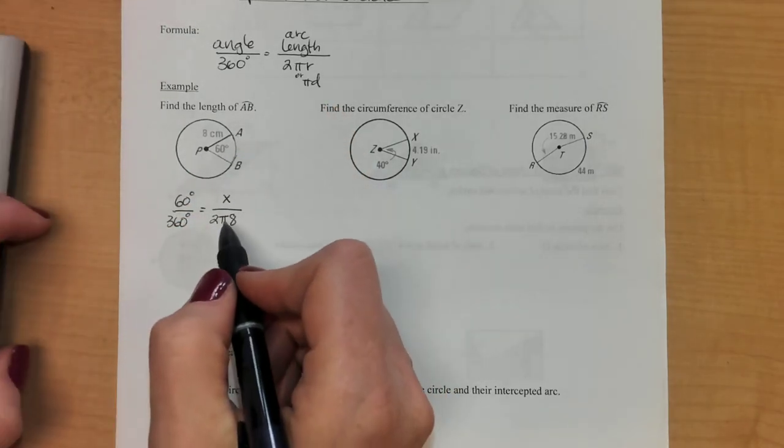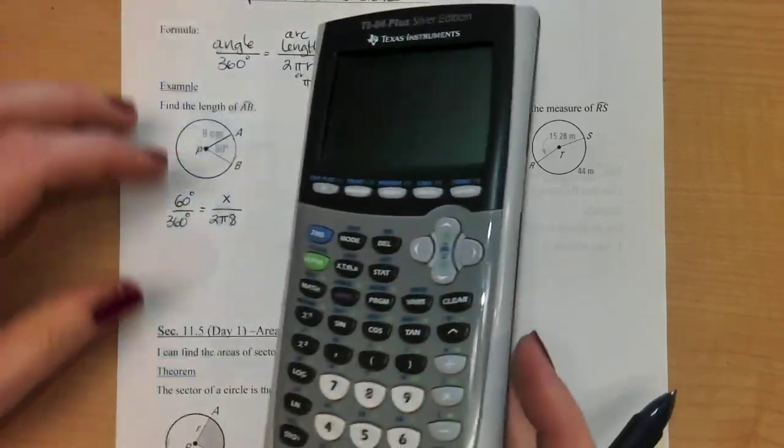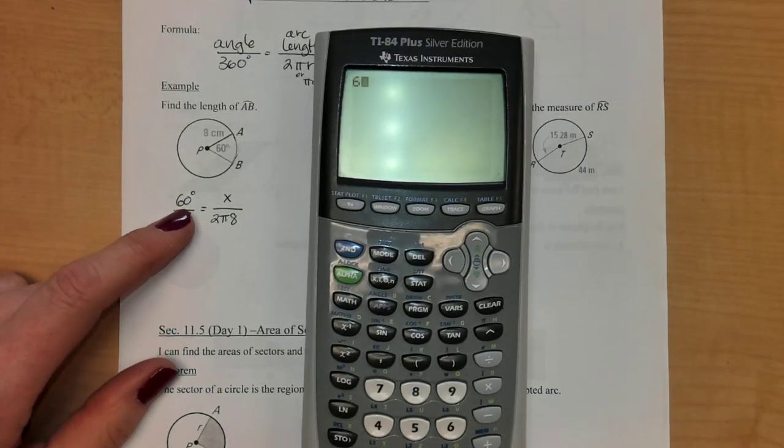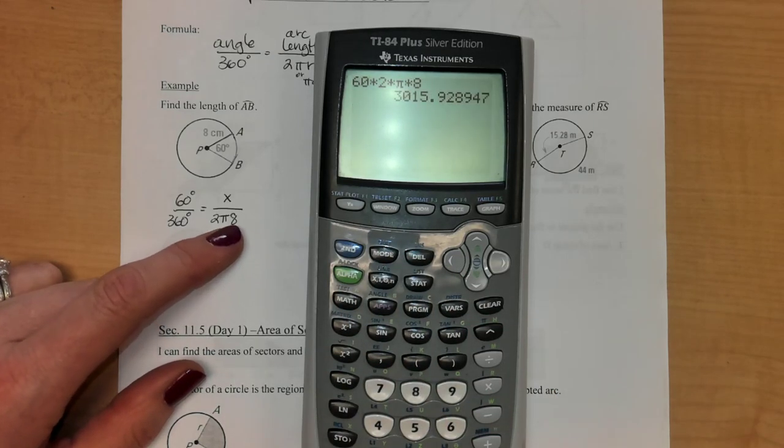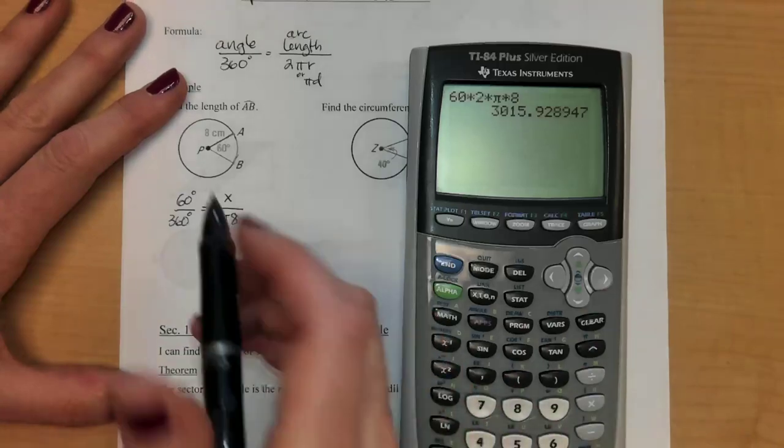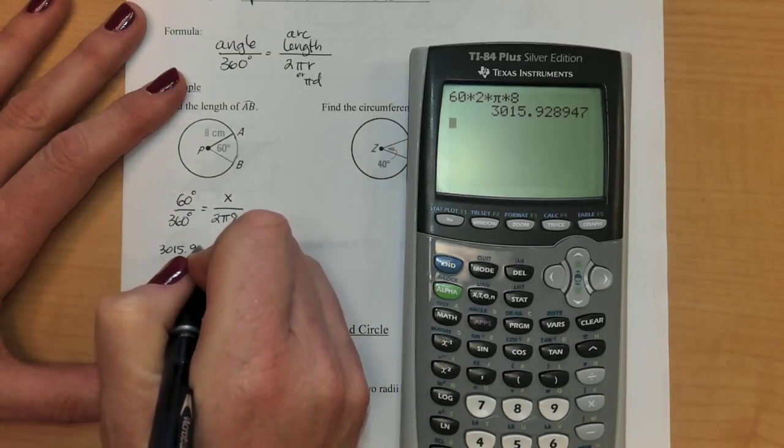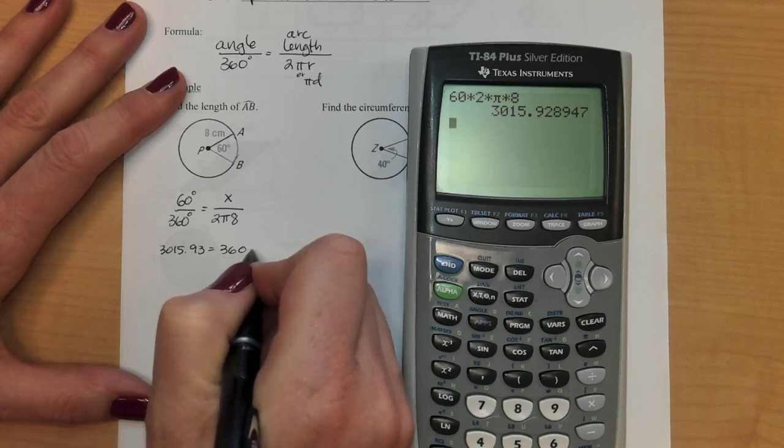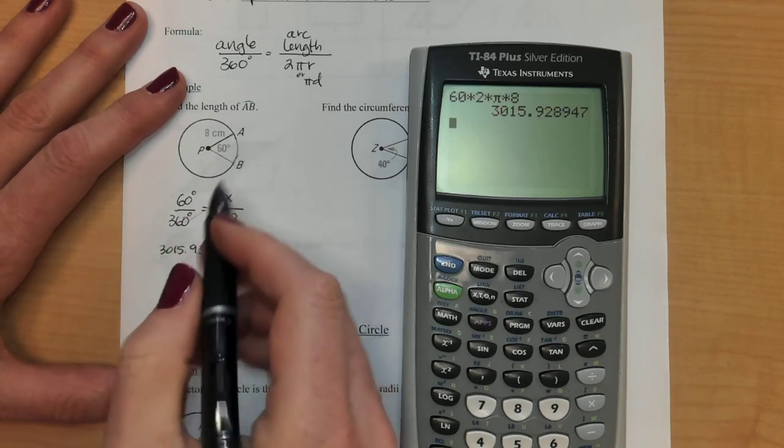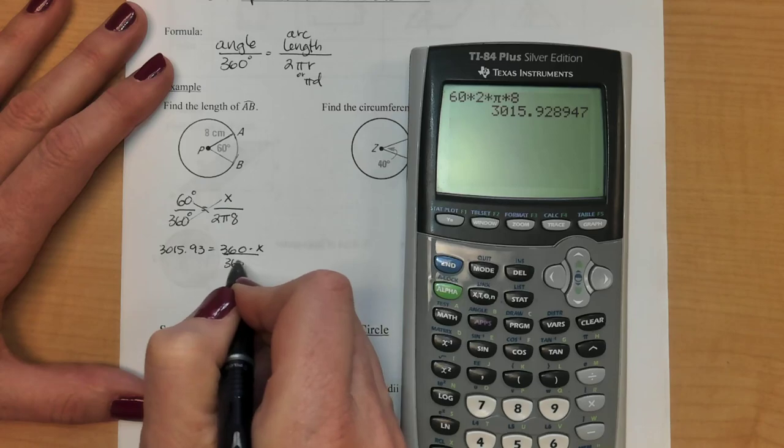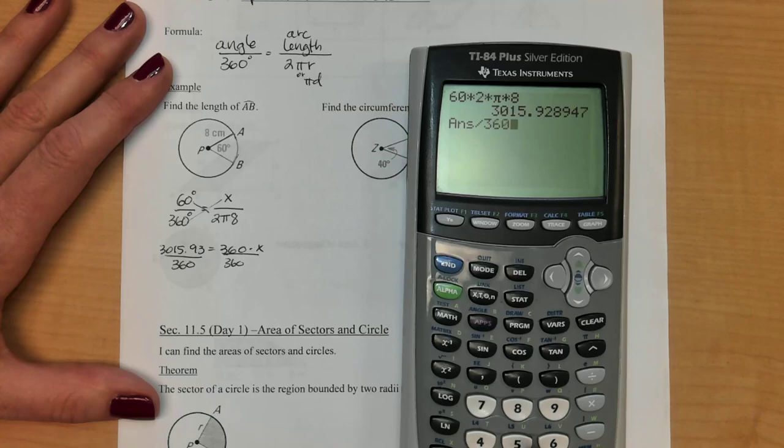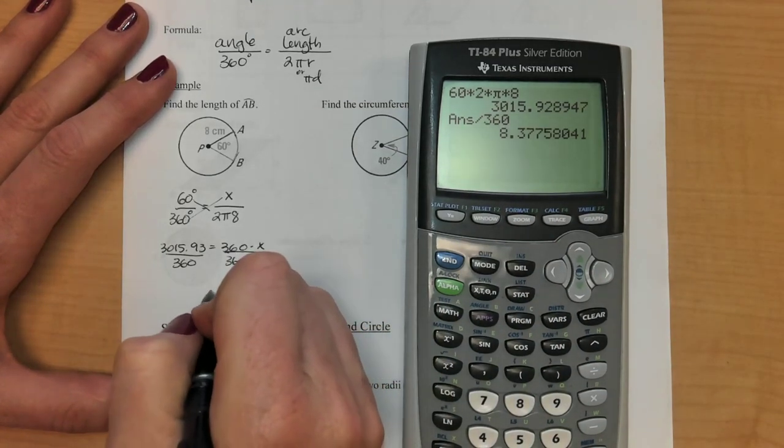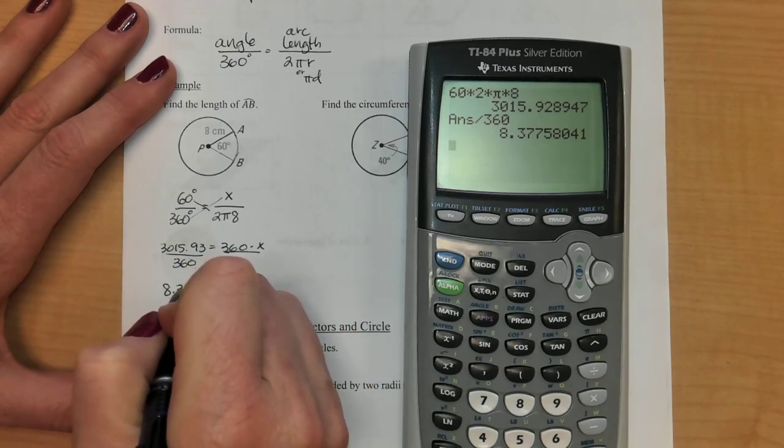And when we cross multiply and divide, we're just going to multiply this diagonal. So I'm literally just going to type in 60 times 2 times π times 8. So 3015.93ish equals 360 times x. So I multiplied these two, multiplied these two. And then we're just going to divide by 360. So if I just hit divide in my calculator and then 360, it's going to actually use that whole decimal. So I'm going to get a better answer.